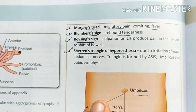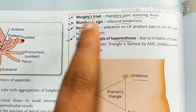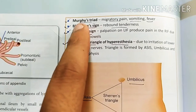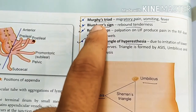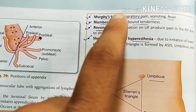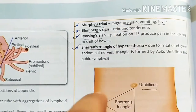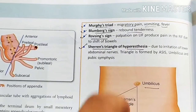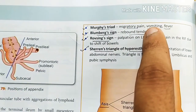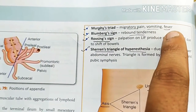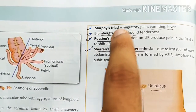Now we will learn some important terminology associated with appendicitis. First is Murphy's triad. Triad means three signs together. Murphy's triad consists of: one, migratory pain — the pain migrates from one place to another; two, vomiting; and three, fever. These three together are known as Murphy's triad.